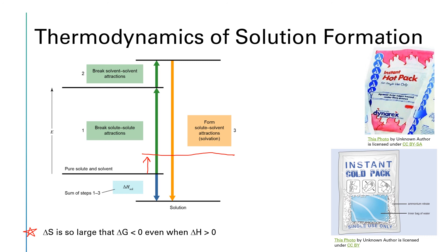Generally, solution formation is spontaneous. We end up with a negative delta G even in the case of an endothermic reaction process where delta H is positive because delta S is going to be so large that it forces delta G to be negative.